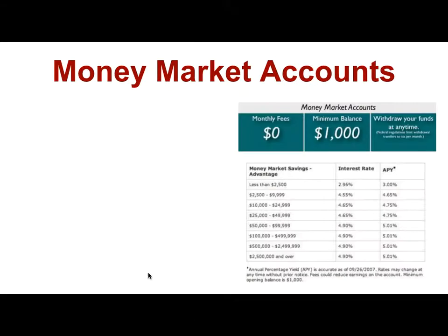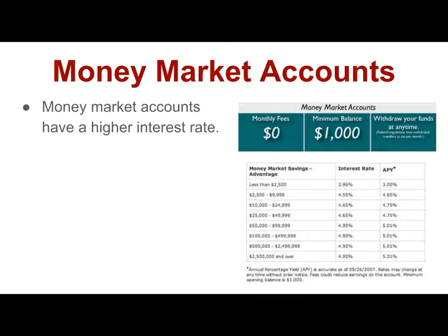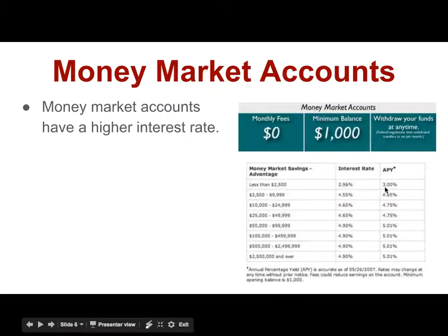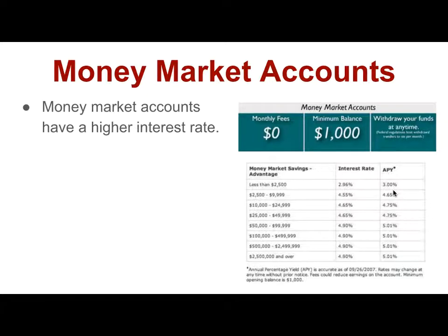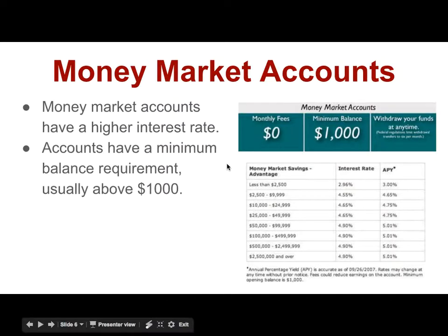A money market account is a little different. It has a much higher rate of interest — you can see interest rates of 3%, which will beat inflation, all the way up to 5%, depending upon the amount of money that you put into it. Now, 5% is not a wonderful interest rate, and 3% is certainly not great. You can do better things with your money. But these are savings plans and they are completely safe.